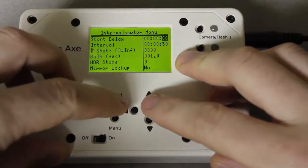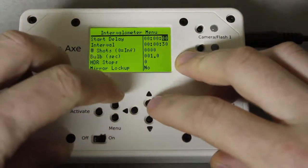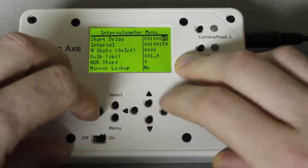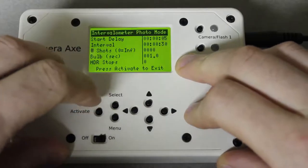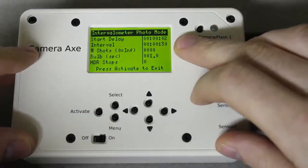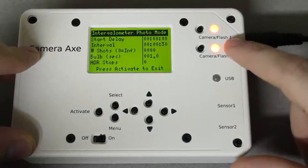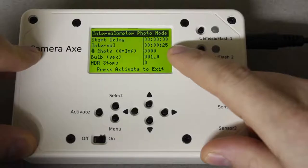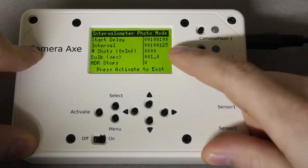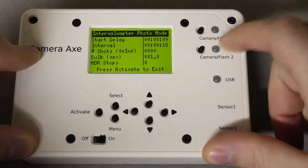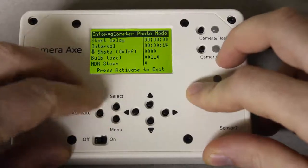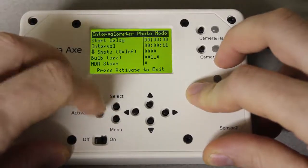So if we set this to let's say five seconds, what that means is we hit activate so it'll count down from five seconds and then it'll take its first picture. Then it starts going to the interval timer which is set to 30 seconds by default, and now after 30 seconds it'll take the second photo and then after another 30 seconds it'll take a third photo. So that's pretty much how that works.